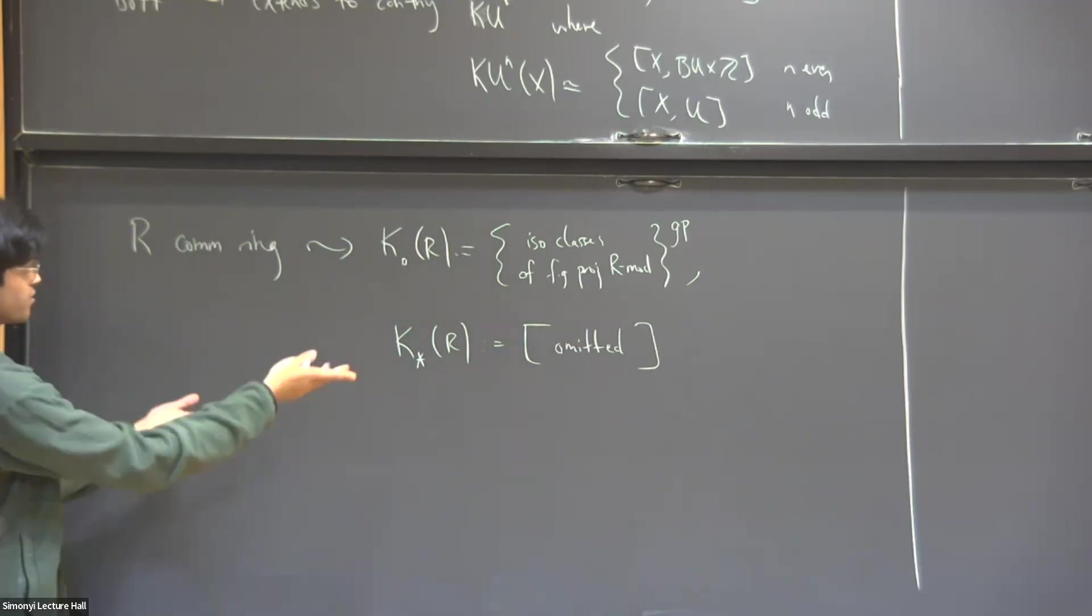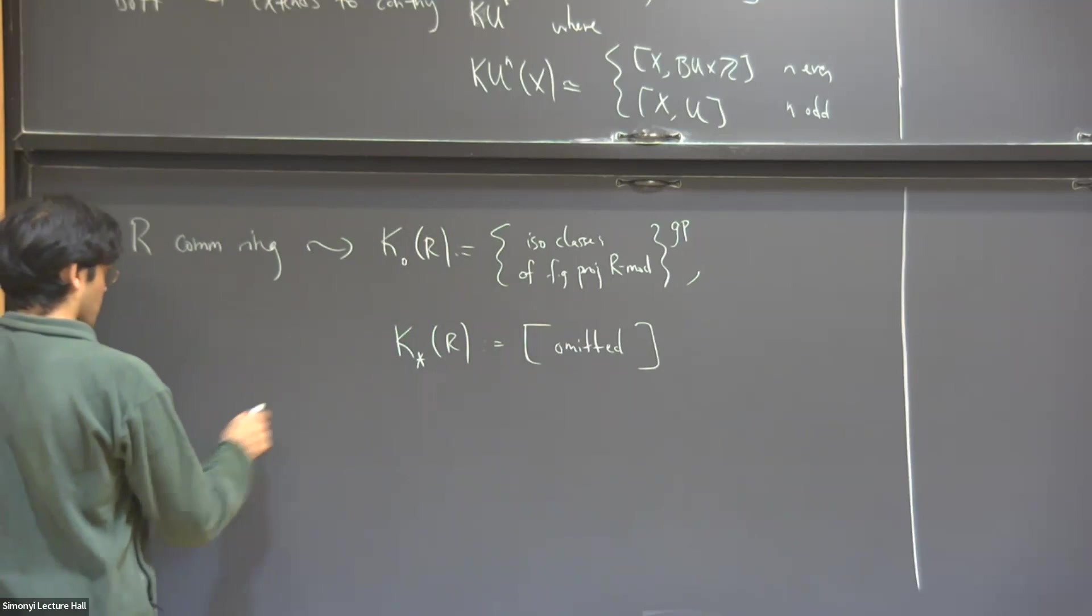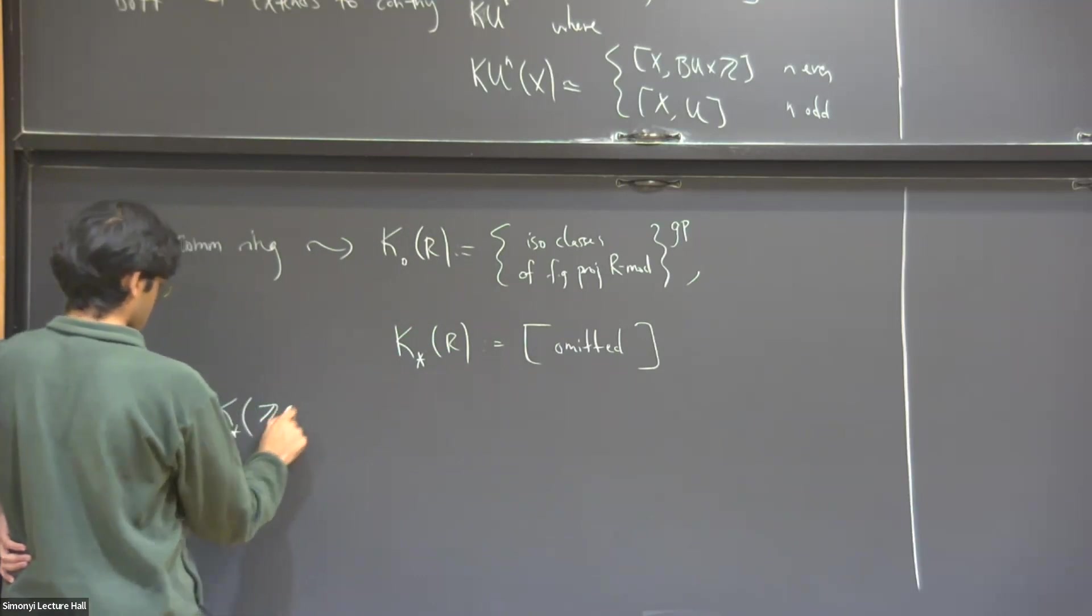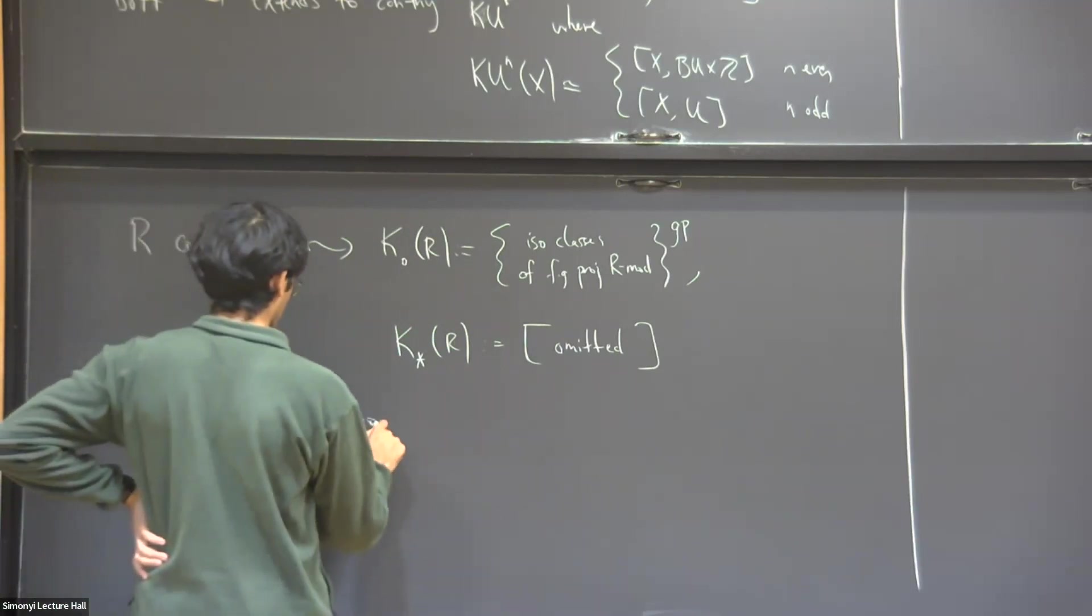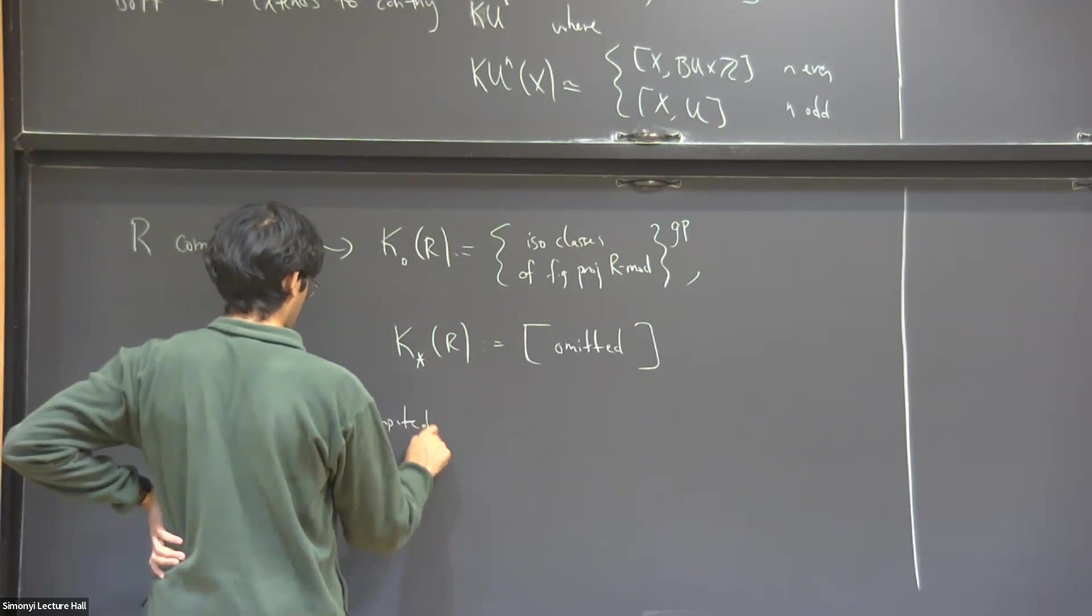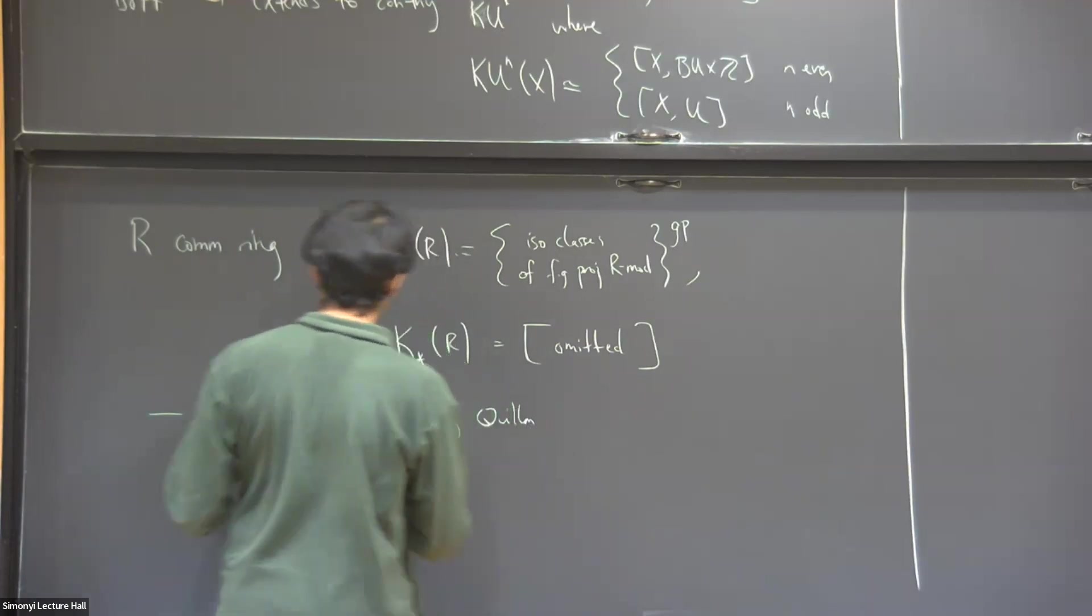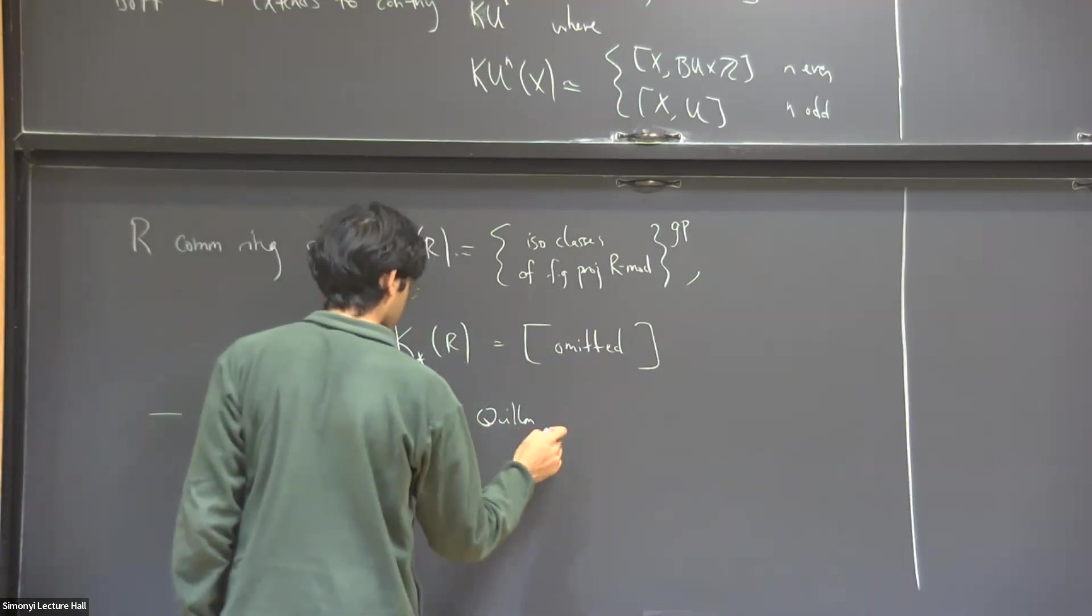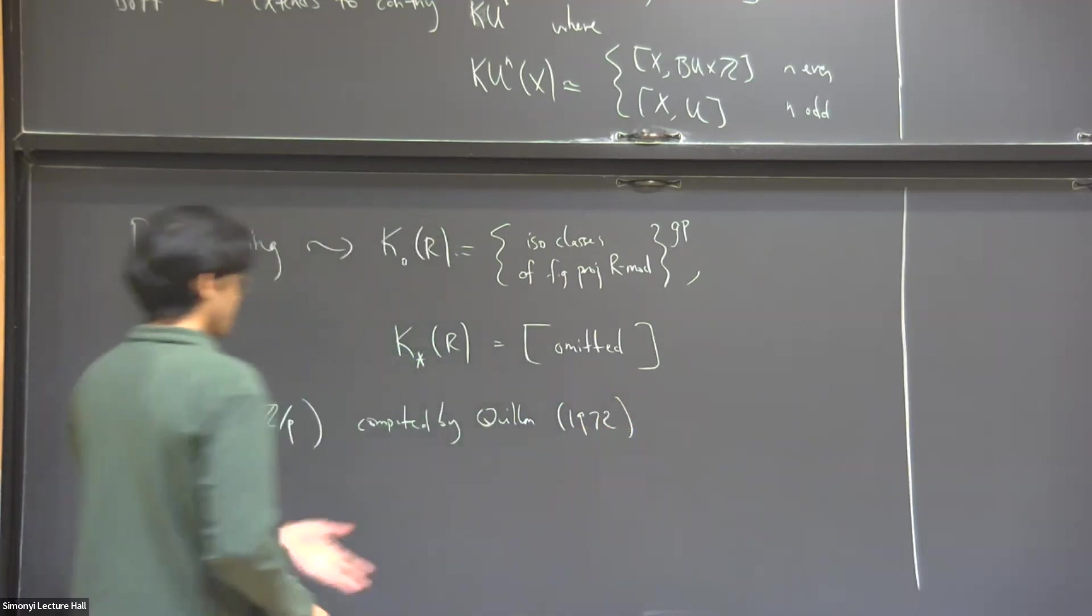So let me give an example illustrating the challenging nature of this thing. So one case where it is understood is a very simple ring, a finite field of p elements, so Z mod p. And this thing was computed by Quillen. So these groups are completely understood. The formula appeared in 1972, shortly after he defined these groups,